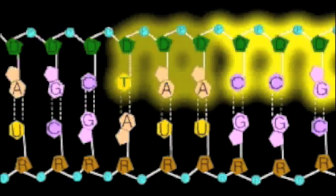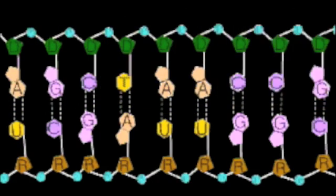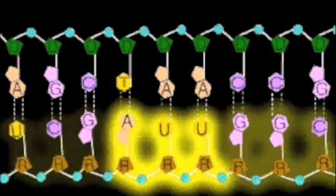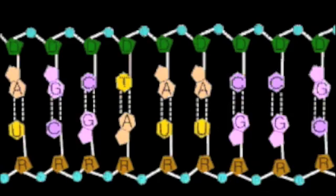Sub out thymine, put in uracil. Now ribose sugar, you know the drill. Ribose is different because of the extra O. Now transcription is ready to go.